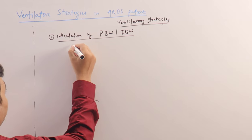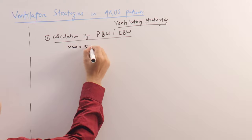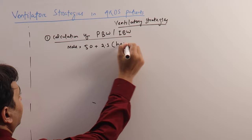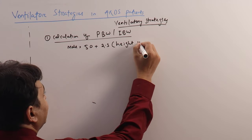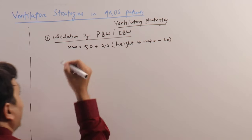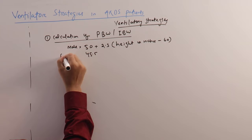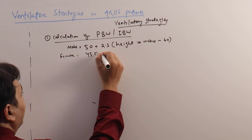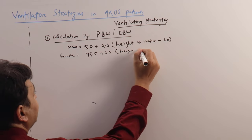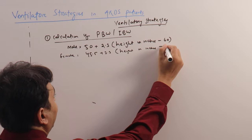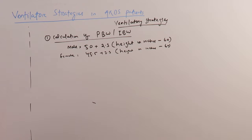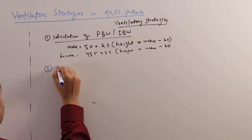Depending upon height, we calculate predicted body weight. The formula is: for male, it is 50 plus 2.3 into (height in inches minus 60). For female, it becomes 45.5 plus 2.3 into (height in inches minus 60).